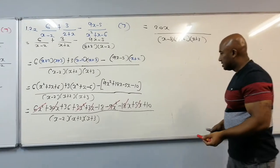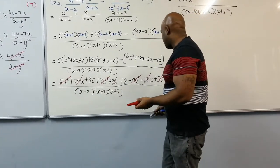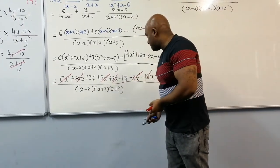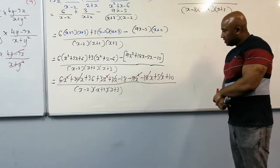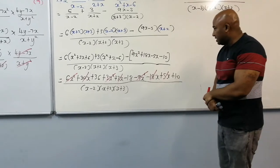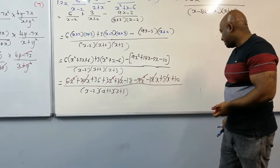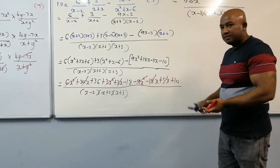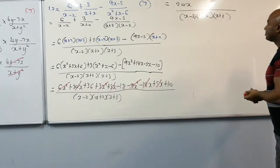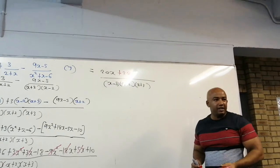Now dealing with the constants: 36 minus 18 is 18, plus 10 gives 28. Please double-check — is that 28? Yes.